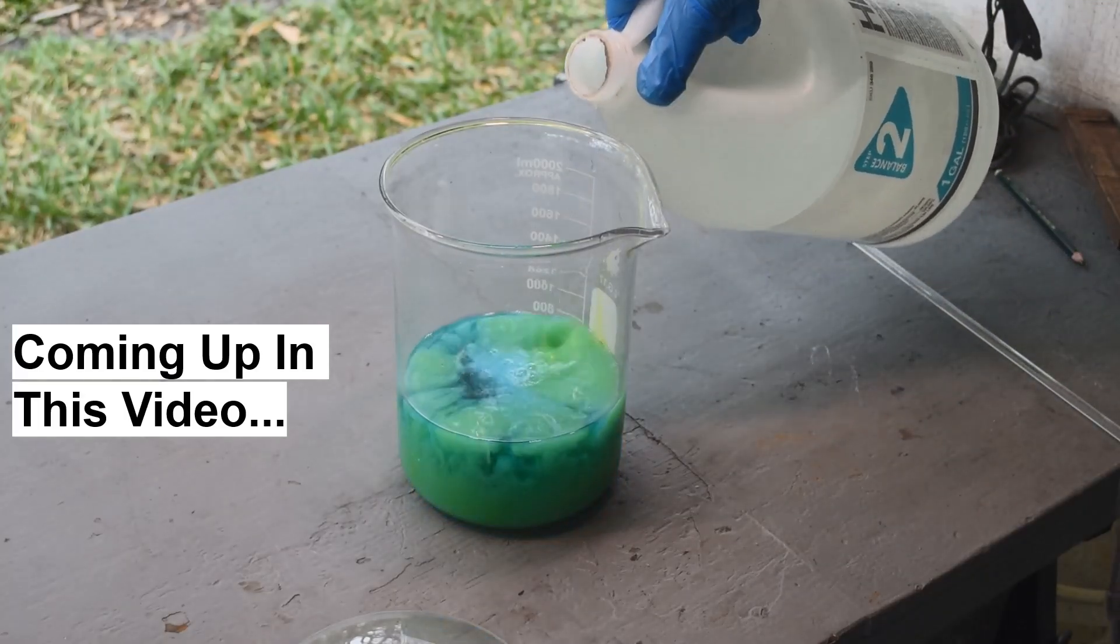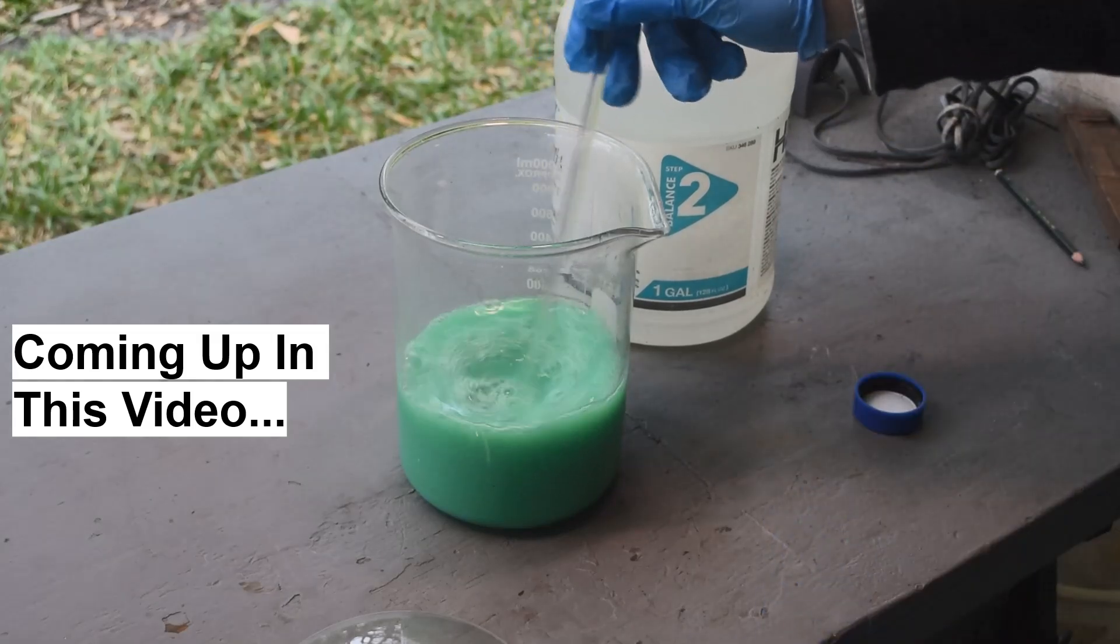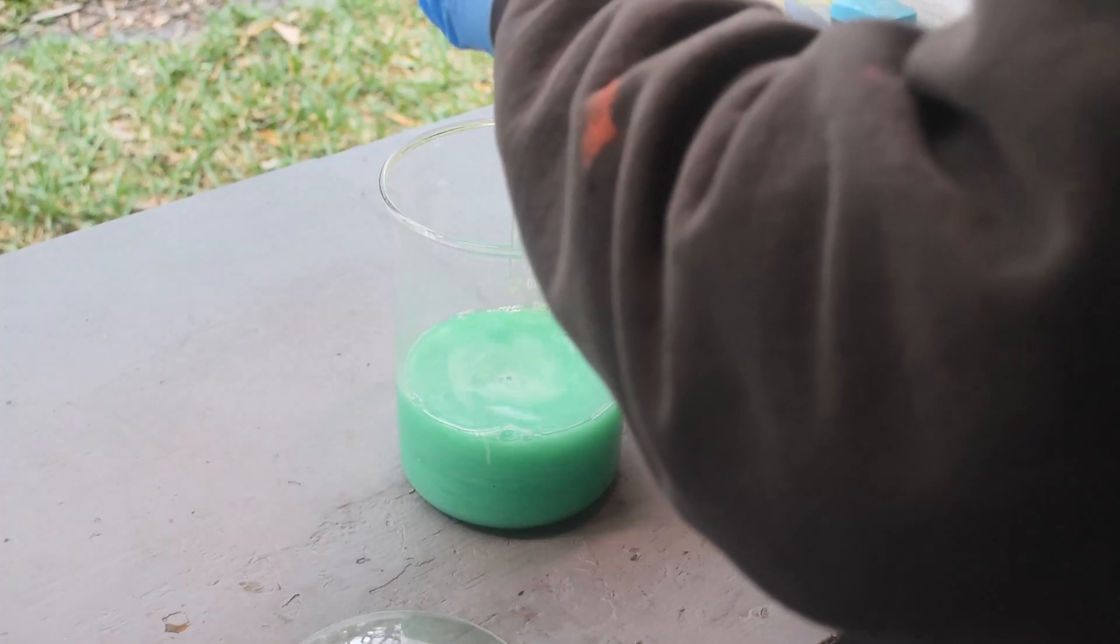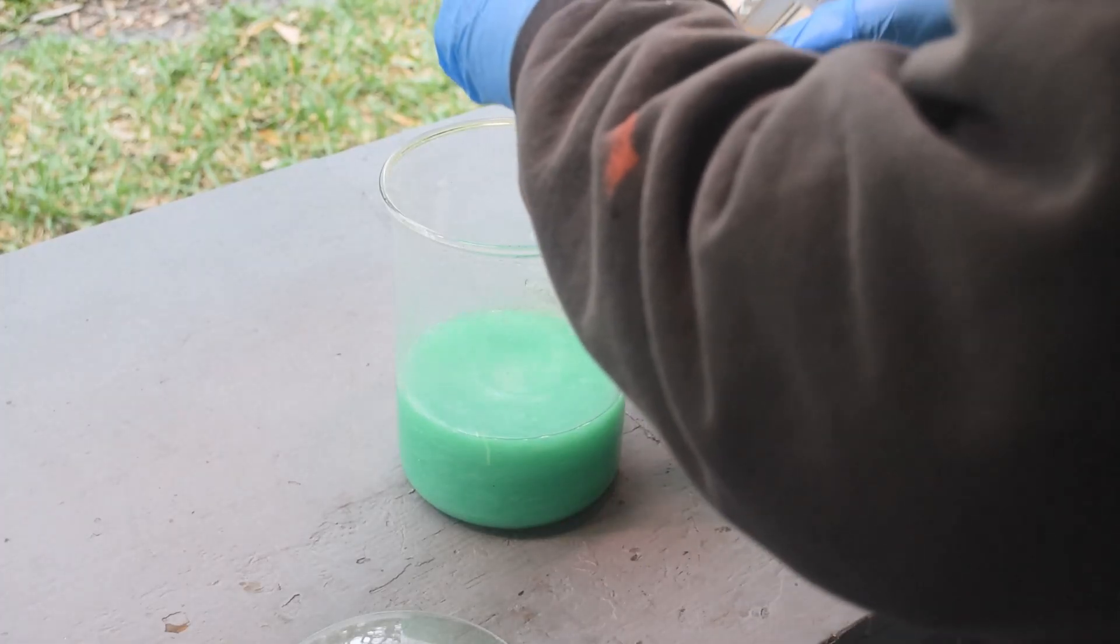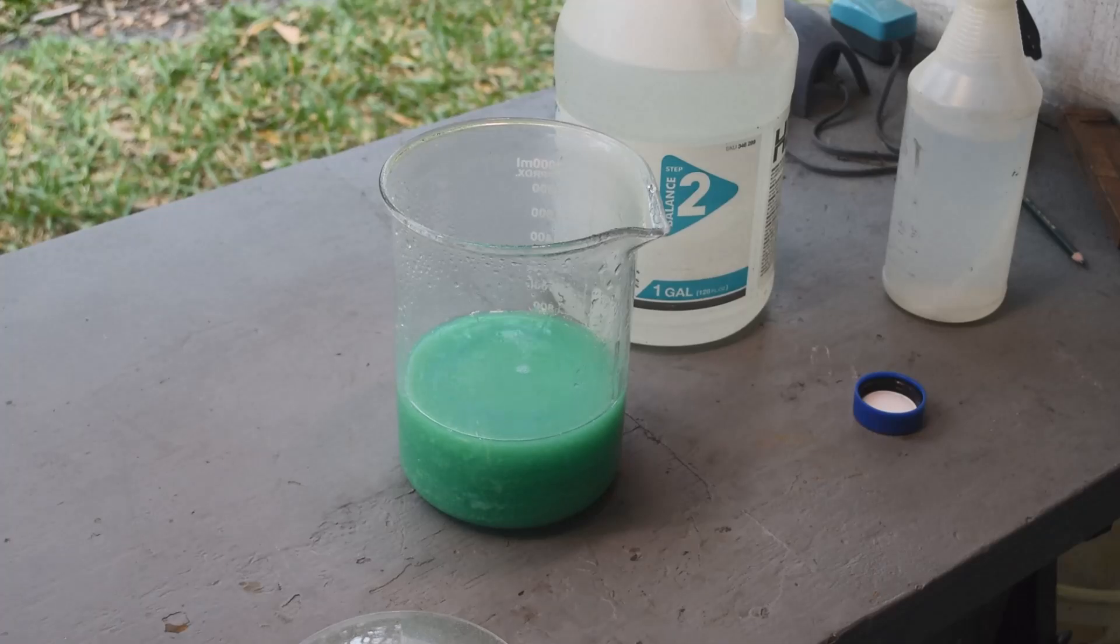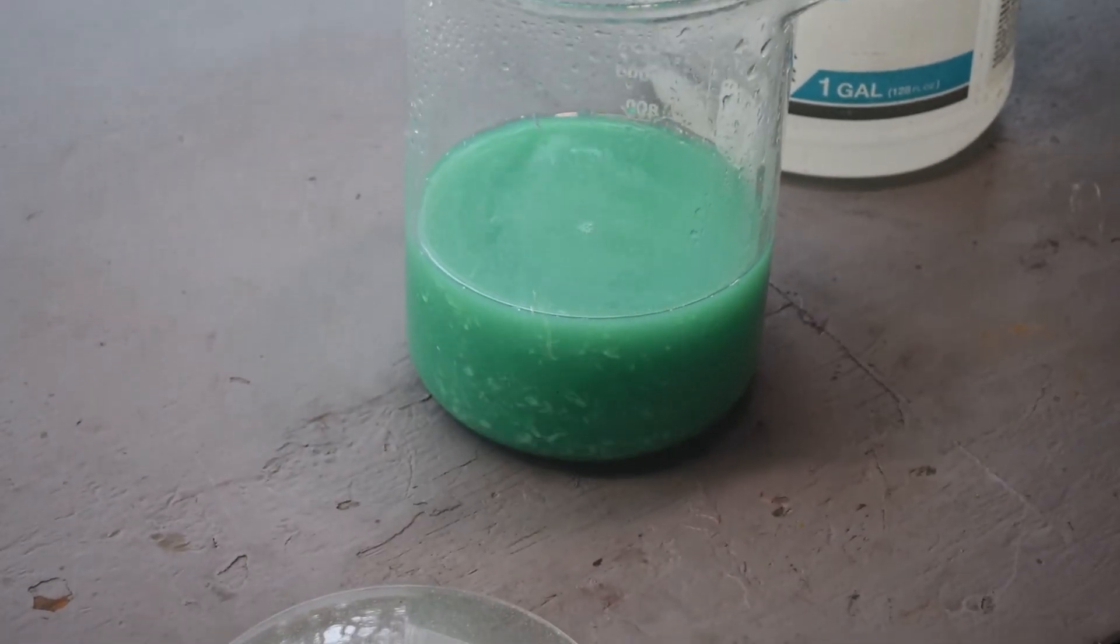Yeah, there we go. All right, so we'll let this settle out and we'll get a nice layer of silver chloride down on the bottom. See that cottage cheesy silver chloride starting to accumulate down there.